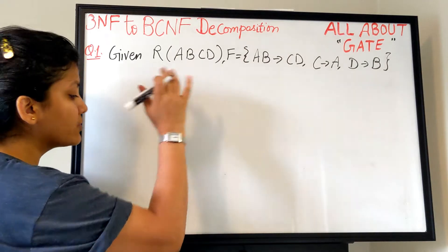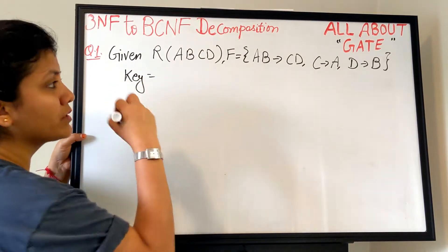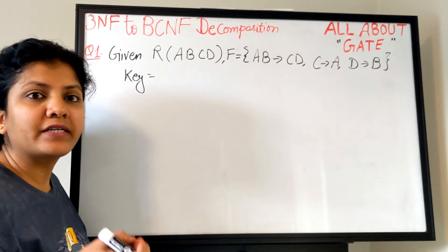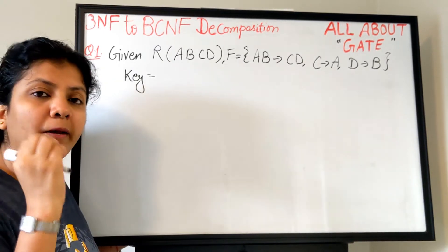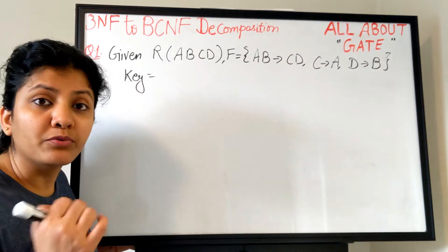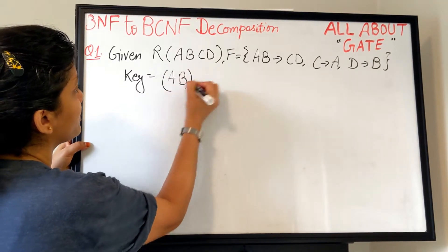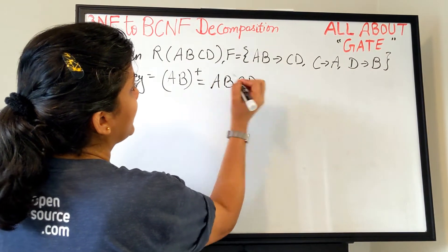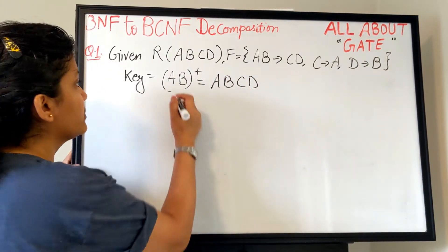First, we will check which normal form this relation is already in. For that, we always start by finding the keys. Let's compute AB+: from AB→CD, AB gives us A, B, C, and D — so AB+ = ABCD. Then A+ gives only A, and B+ gives only B. So AB is a key.